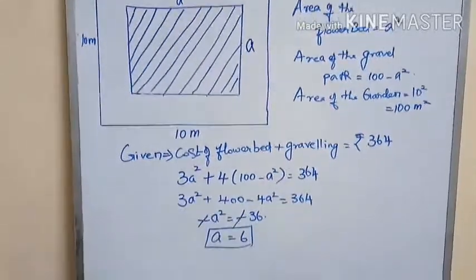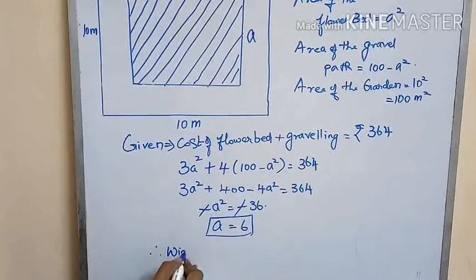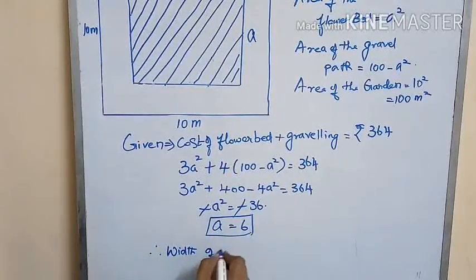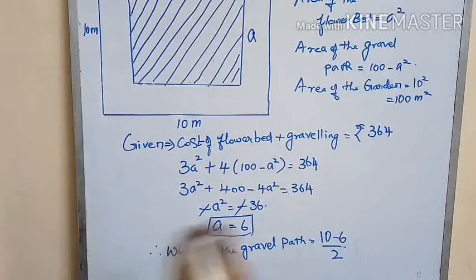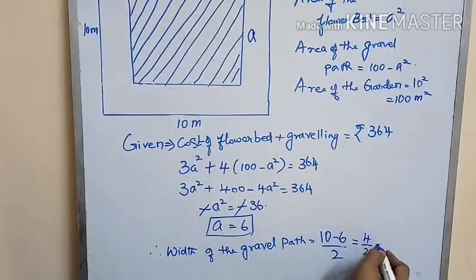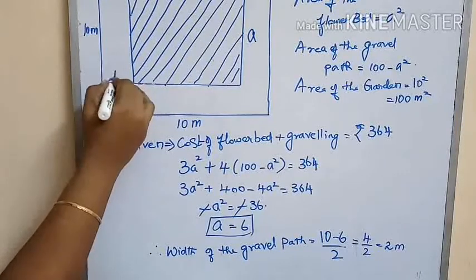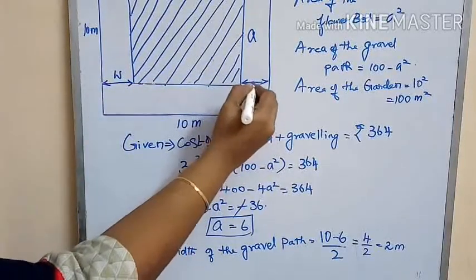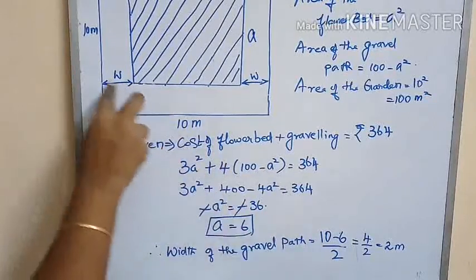We are asked to find the width of the pathway. The width of the gravel path is equal to (10 minus 6) divided by 2. The length of the garden is 10 meters and the flower bed side is 6, so 10 minus 6 gives 4, and we have two widths on either side, so we divide by 2 to get w. That gives 4 divided by 2, which is equal to 2 meters.